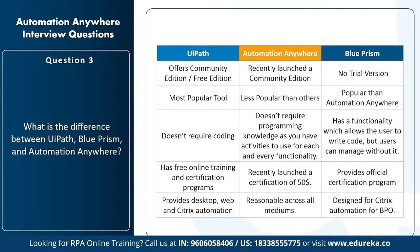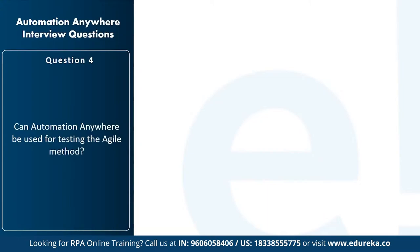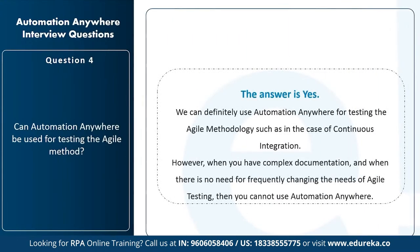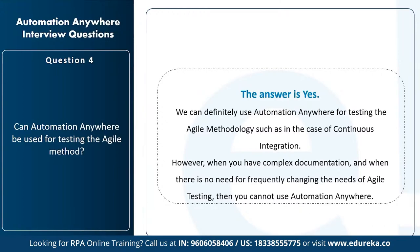UiPath is used for desktop, web, and Citrix automation; Automation Anywhere is usable across all mediums; and Blue Prism is mainly designed for Citrix automation for business process outsourcing. The next question is: can Automation Anywhere be used for testing the agile method? The answer is yes — we can use Automation Anywhere for testing agile methodology such as continuous integration. However, you cannot use it when there is complex documentation and no need for frequently changing agile testing requirements.